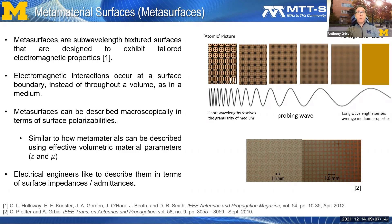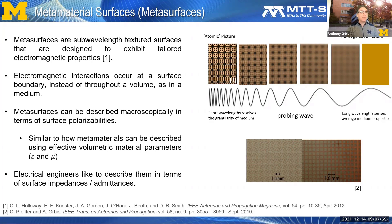Electromagnetic meta-surfaces are finely patterned surfaces whose intricate patterns or textures dictate their electromagnetic properties. Conventional field shaping devices, such as lenses and prescription eyeglasses, rely on thickness and propagation length to manipulate electromagnetic waves through interference. In contrast, meta-surfaces manipulate electromagnetic waves across negligible thicknesses through surface interactions. Meta-surfaces can be described microscopically in terms of surface polarizabilities that relate dipole moments to average fields, similar to how volumetric materials are described using permittivity and permeability. As electrical engineers, we also like to describe them in terms of surface impedances or admittances.